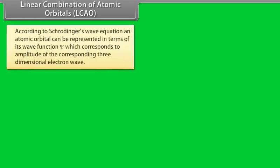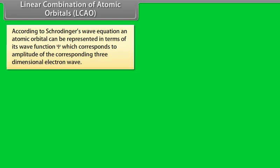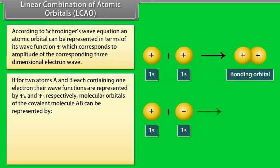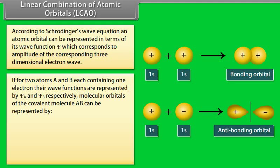Linear Combination of Atomic Orbitals (LCAO). According to Schrödinger's Wave Equation, an atomic orbital can be represented in terms of its wave function ψ, which corresponds to the amplitude of the corresponding three-dimensional electron wave. A linear combination of two atomic orbitals can be achieved by addition and subtraction of two atomic orbitals of the individual atoms. For two atoms A and B each containing one electron, with wave functions ψA and ψB respectively, molecular orbitals of the covalent molecule AB can be represented as ψB = ψA + λψB.